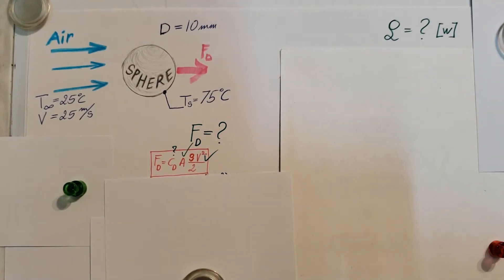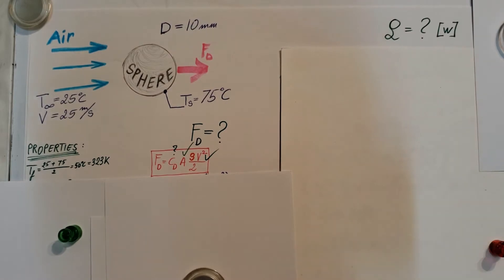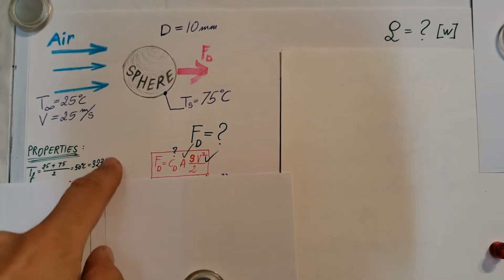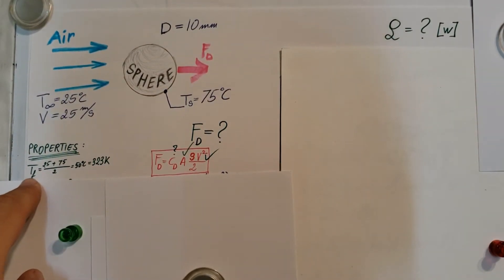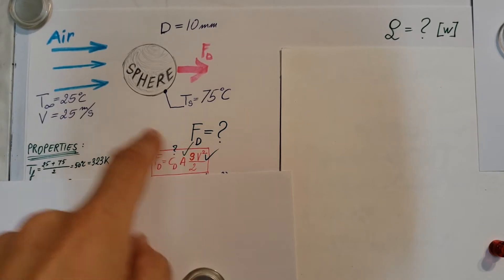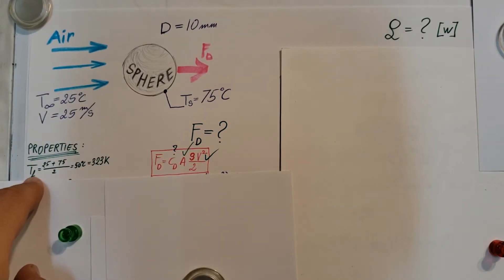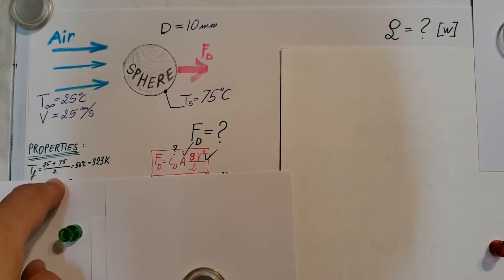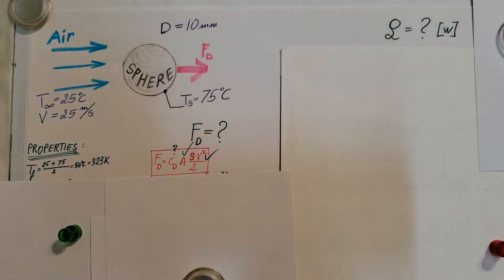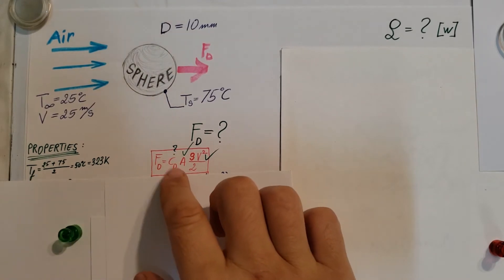Let's take a look at our properties. For the properties, we're going to be able to find them for this formula at the film temperature. For us that would be 25 plus 75 divided by 2, that's 50 Celsius. Convert it to Kelvin: 323 Kelvin.